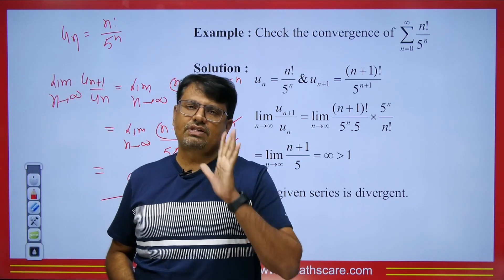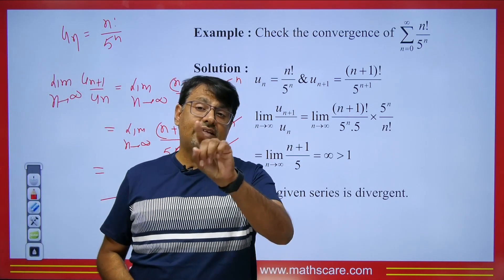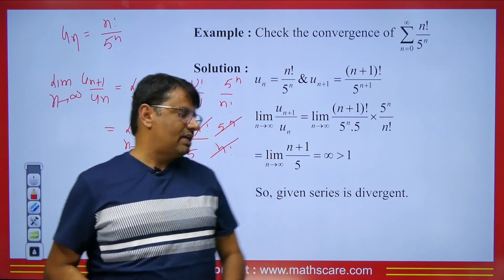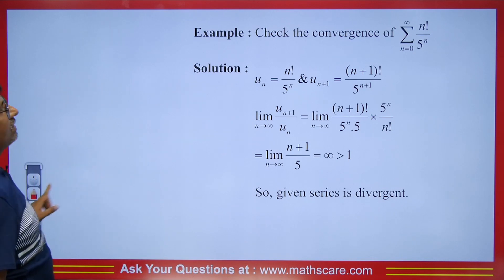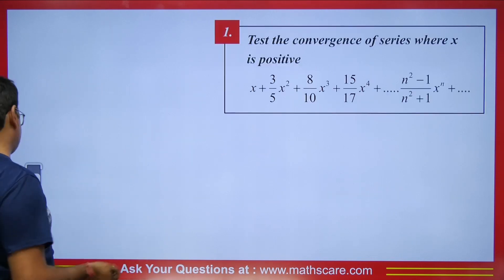To recap: if the limit is less than 1, then it's convergent; if greater than 1, it's divergent. This is how we solve this type of question.